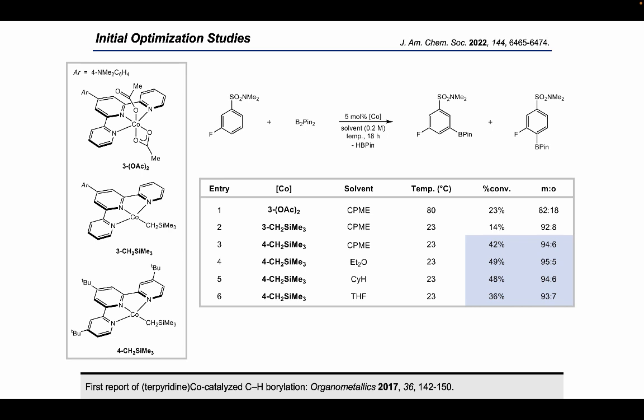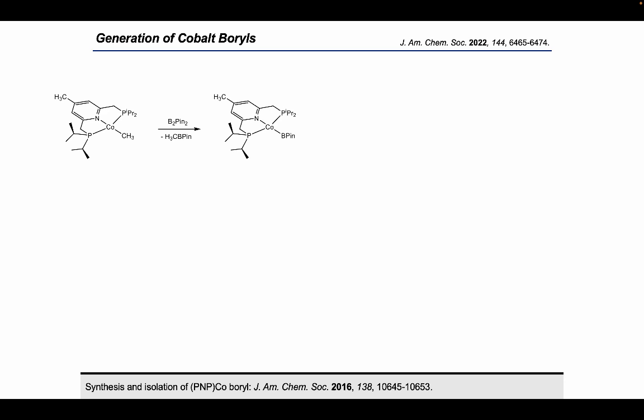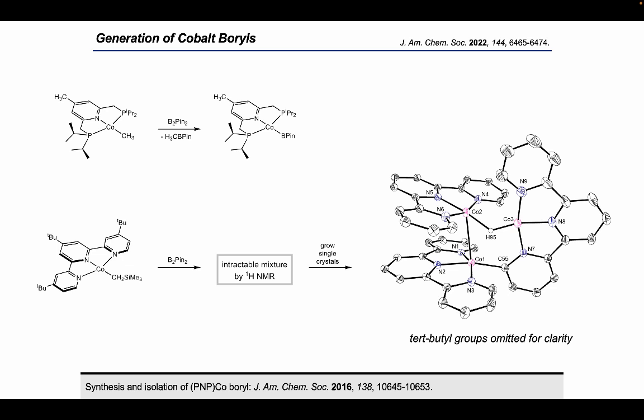Changing other reaction conditions did not significantly improve reactivity, so we took a break from screening and turned to stoichiometric chemistry to improve our understanding of catalyst speciation. In previous studies of catalytic C-H borylation, metal boryls have been observed and isolated, providing information on catalyst speciation and resting states. Boryls of PNP-cobalt have been prepared by straightforward addition of B2Pin2 to the cobalt-1 alkyl. Attempting the same reaction with the terpy cobalt complex was not as straightforward and instead gave an intractable mixture of products. We were able to gain some insight by growing single crystals from this reaction mixture, and by single crystal X-ray diffraction we observed a trimetallic cobalt complex featuring three terpy ligands, with one of them C-H activated at the position next to a pyridine nitrogen. We don't know to what extent this species forms in catalysis, but we were invested in trying to shut it down to improve our turnover numbers.